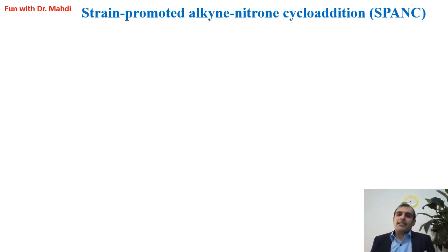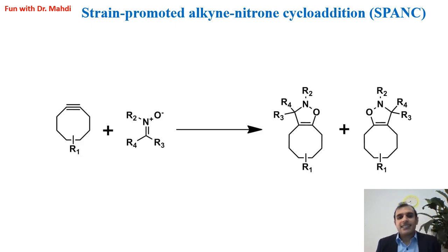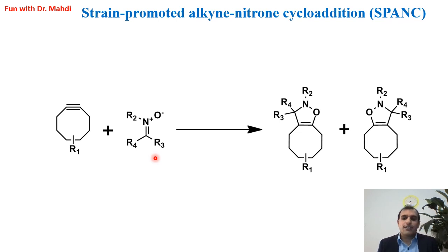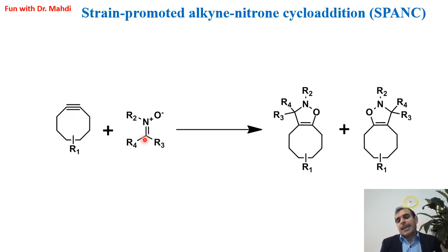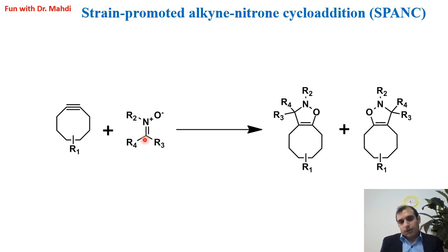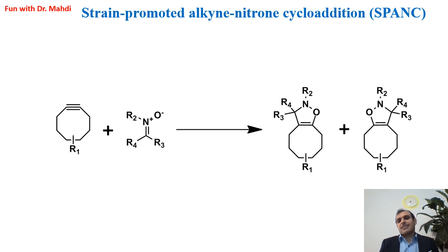The next example for click chemistry is SPANC — strain-promoted alkyne-nitrone cycloaddition. In this case, we replace azide with nitrone. It's a type of click reaction: a reaction between cycloalkyne and nitrone. It's not very practical in chemistry, so let's skip and go to the next type of click reaction.